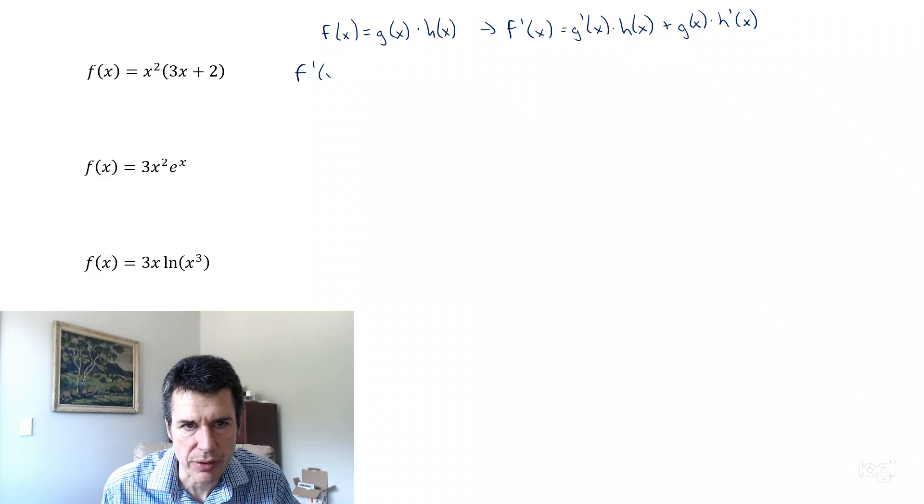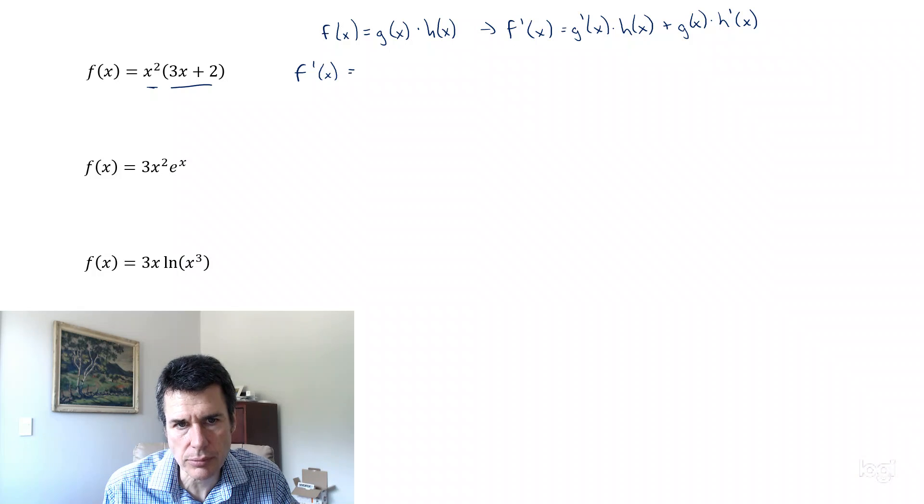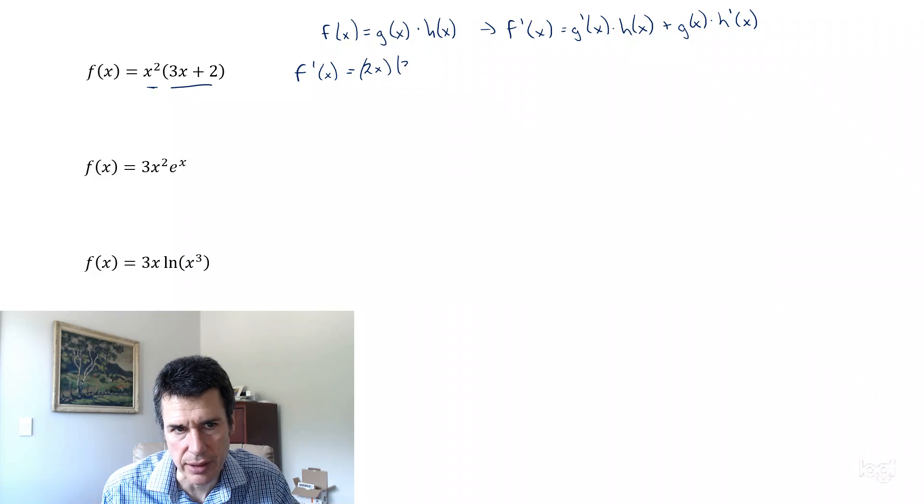So the derivative of this function: the first function is x squared, second function is 3x plus 2. So the derivative of the first function is 2x times the second function plus the first function times the derivative of the second function,